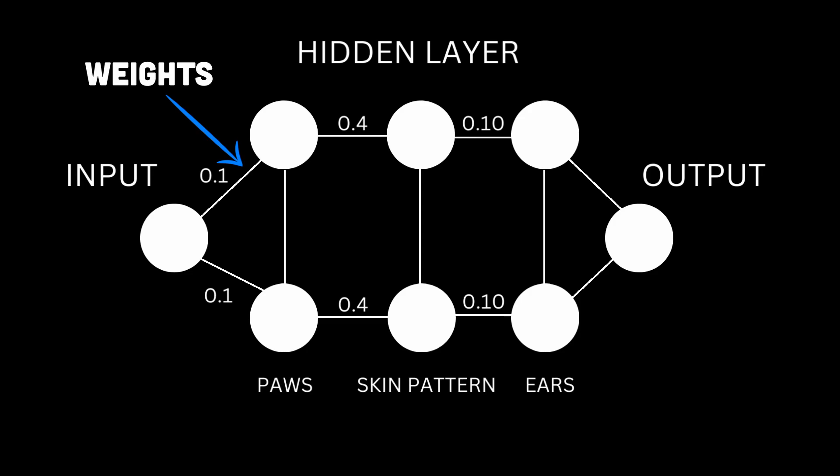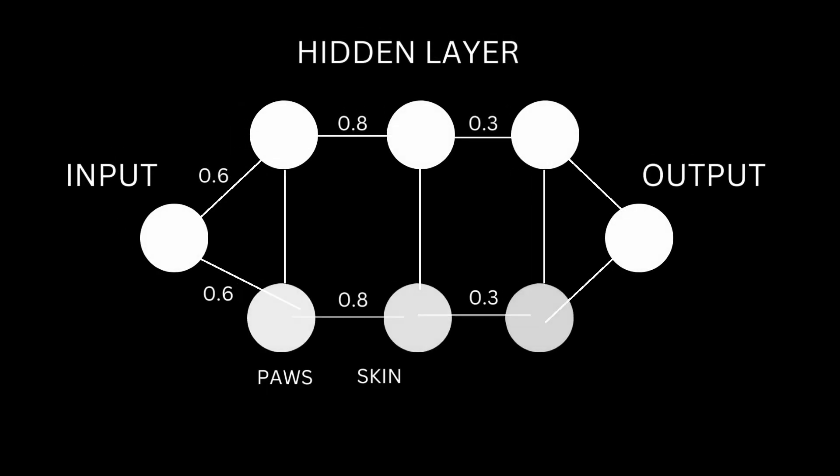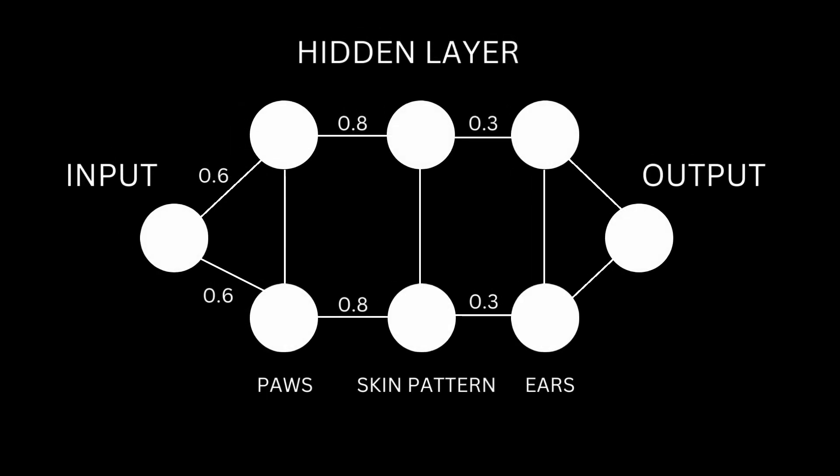For example, maybe counting paws or detecting skin pattern is much more meaningful than mapping ears. In that case, the weights that lead to the ear layer will have lower values than the other two weights.